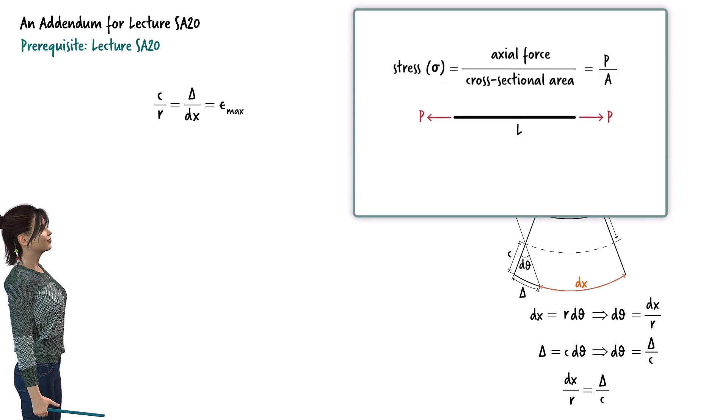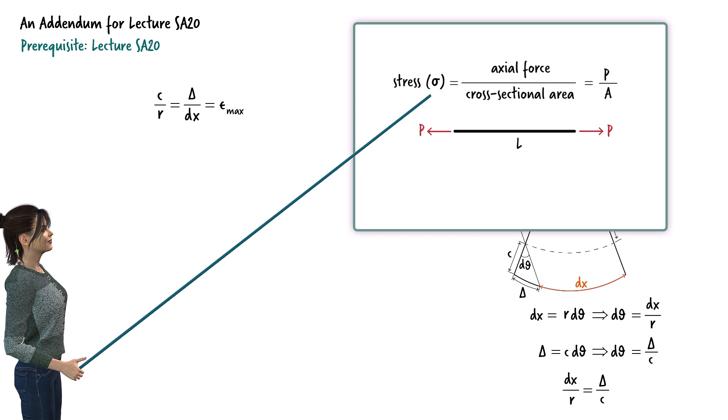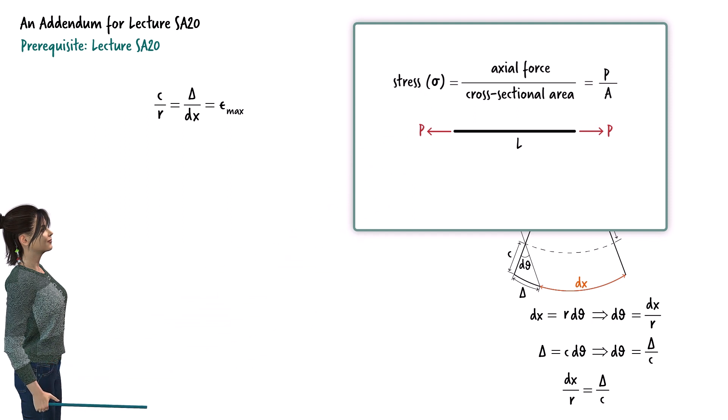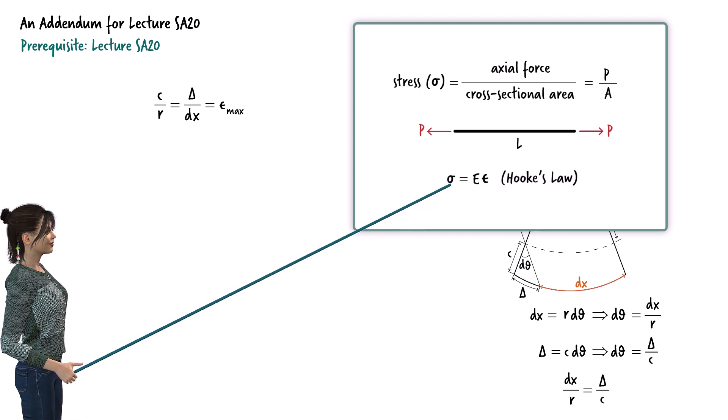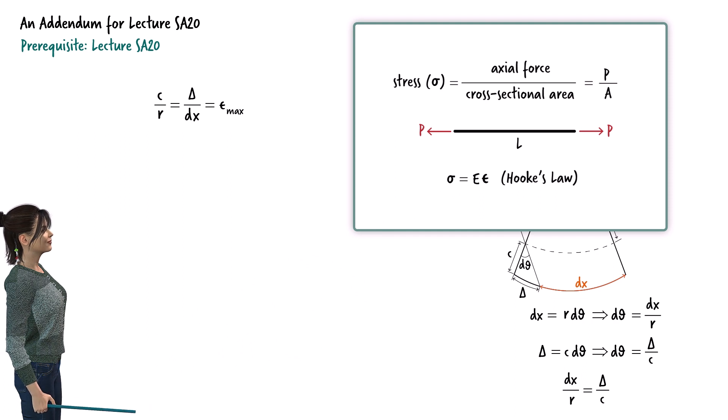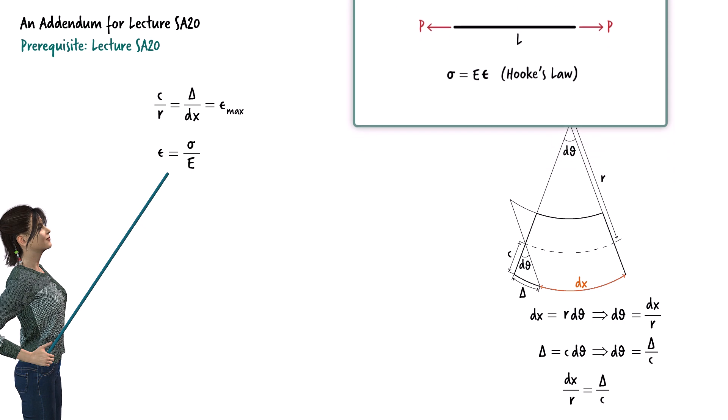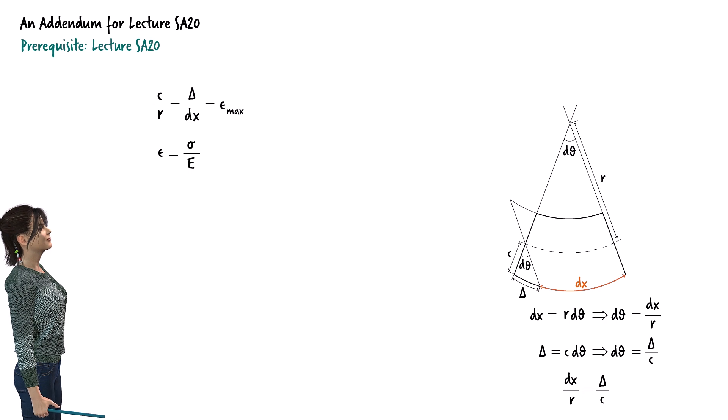Also, recall that axial stress can be written as axial force divided by the cross-sectional area of the member. We denote axial stress using sigma. Using Hooke's law, we can relate axial stress to axial strain using this equation. Here, E is the material's modulus of elasticity. Let's rewrite Hooke's law. Replacing sigma with sigma max and epsilon with epsilon max, we get.